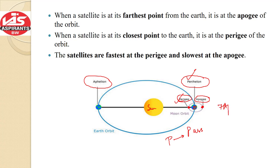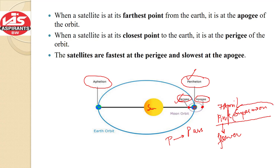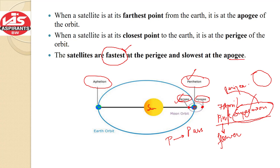On 7th April, if you remember, there was a pink super moon. It was not pink in color — it was named after a pink flower that blooms in the eastern United States in spring. It was simply a super moon because the Moon was at its perigee position — very close to Earth — making it appear full and bright. So at perigee, the distance is less, meaning the satellite or moon revolves with greater velocity. Satellites are fastest at perigee and slowest at apogee.